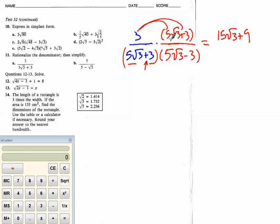Then our denominator, we have 5 times 5 root 3. So, 5 times 5 is 25. Root 3 times root 3 is 3. So, that's obviously 75. We have 3 times negative 3, which is negative 9. 75 minus 9 is 66.